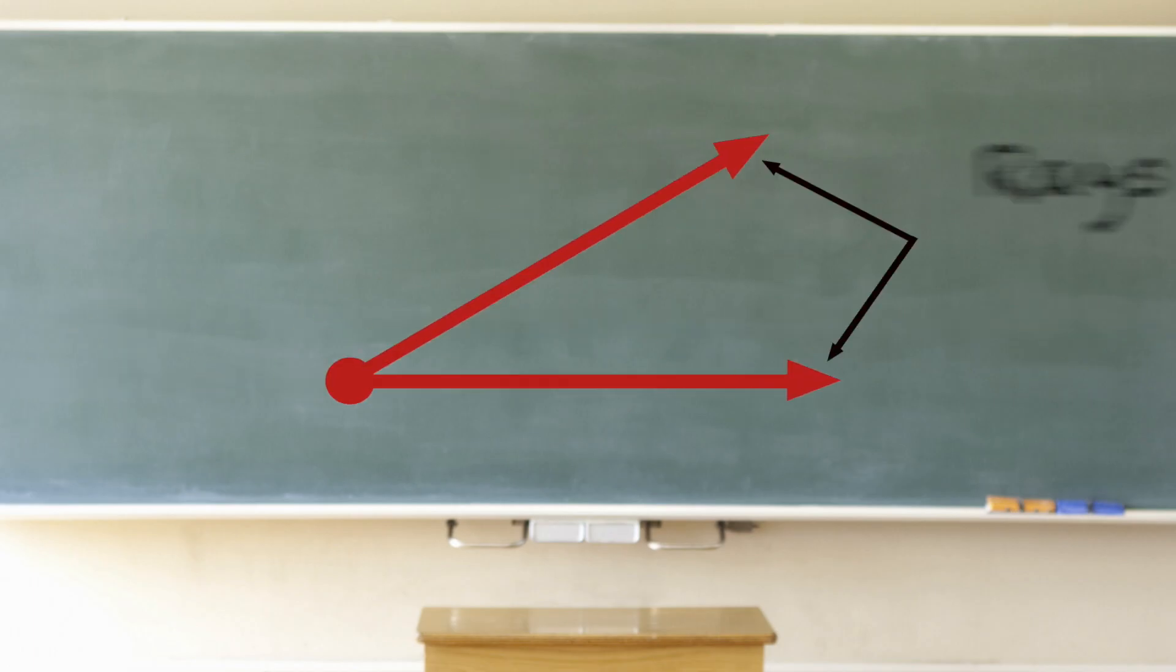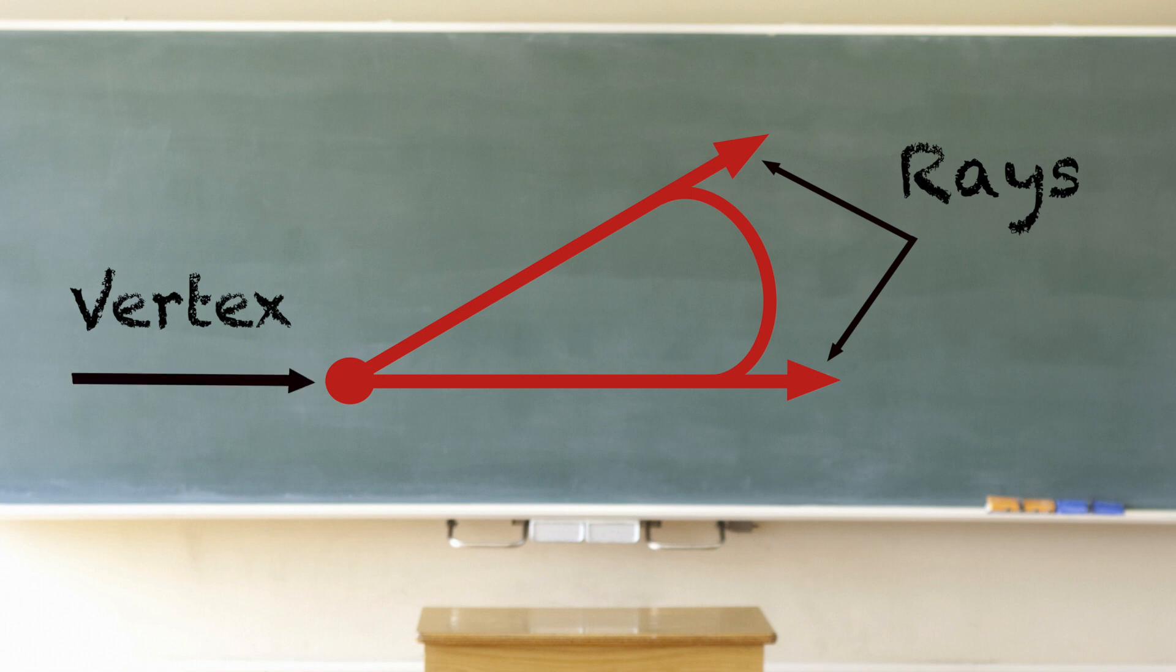Angles are formed by two rays that share a common endpoint. An angle measures the amount of turn. The common endpoint of an angle is called the vertex.